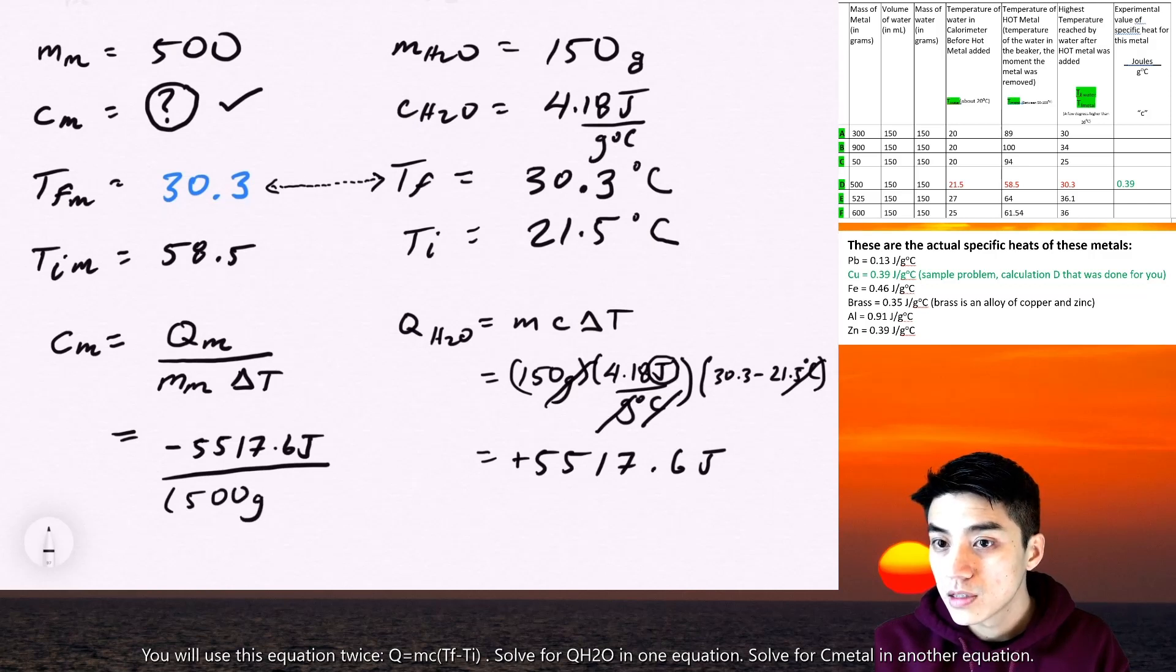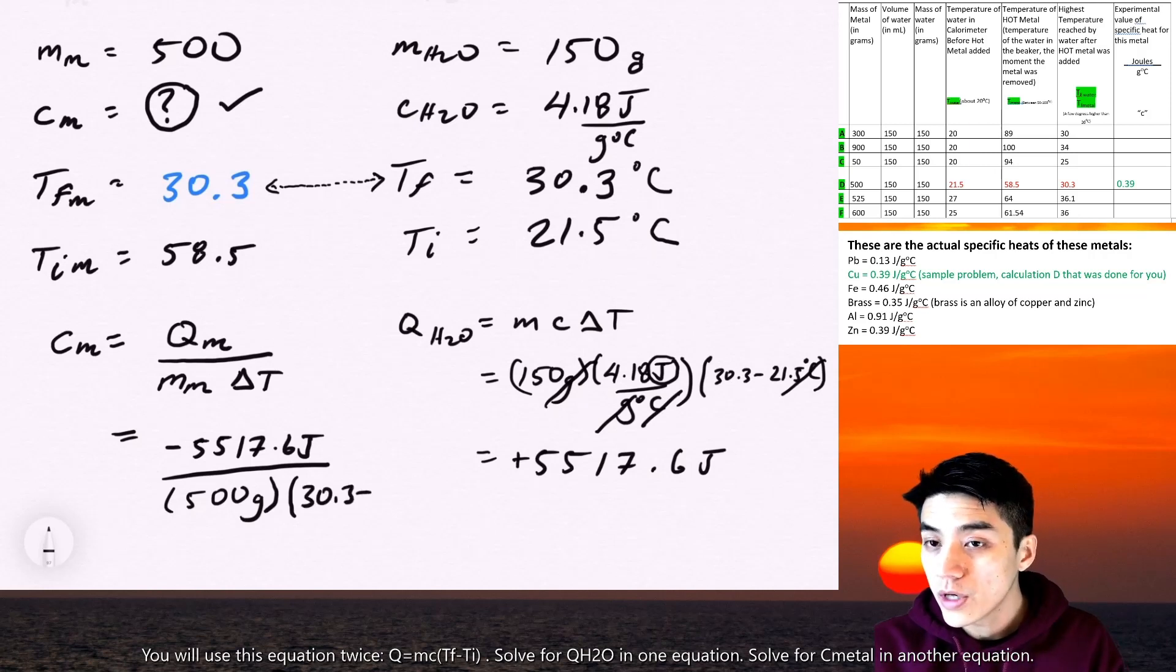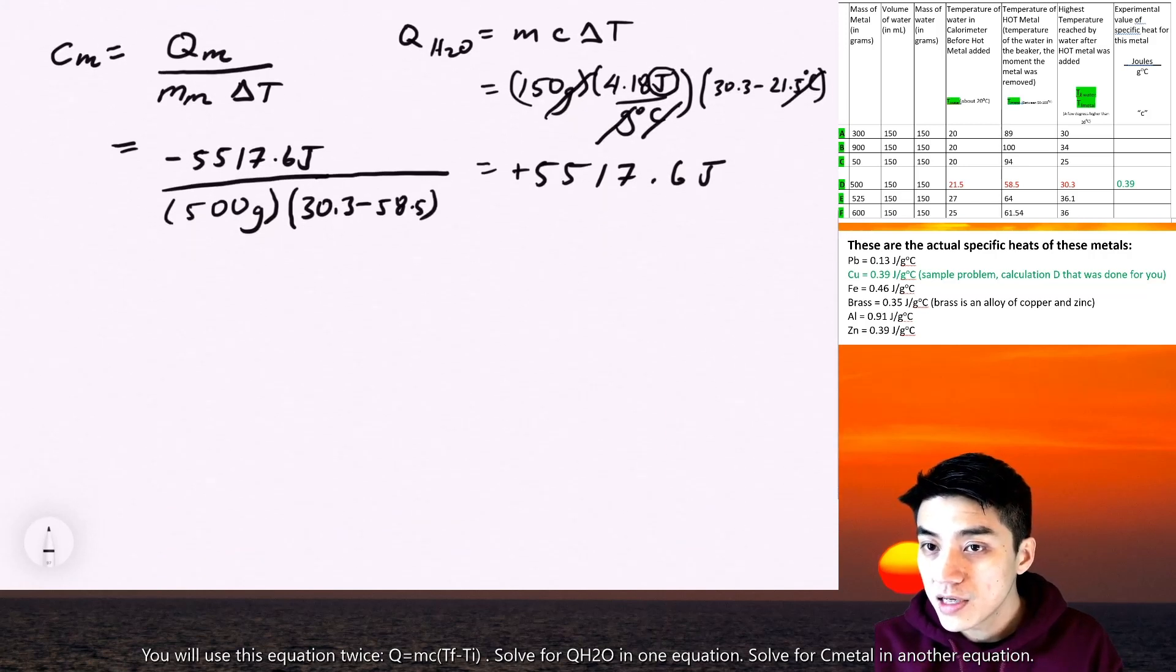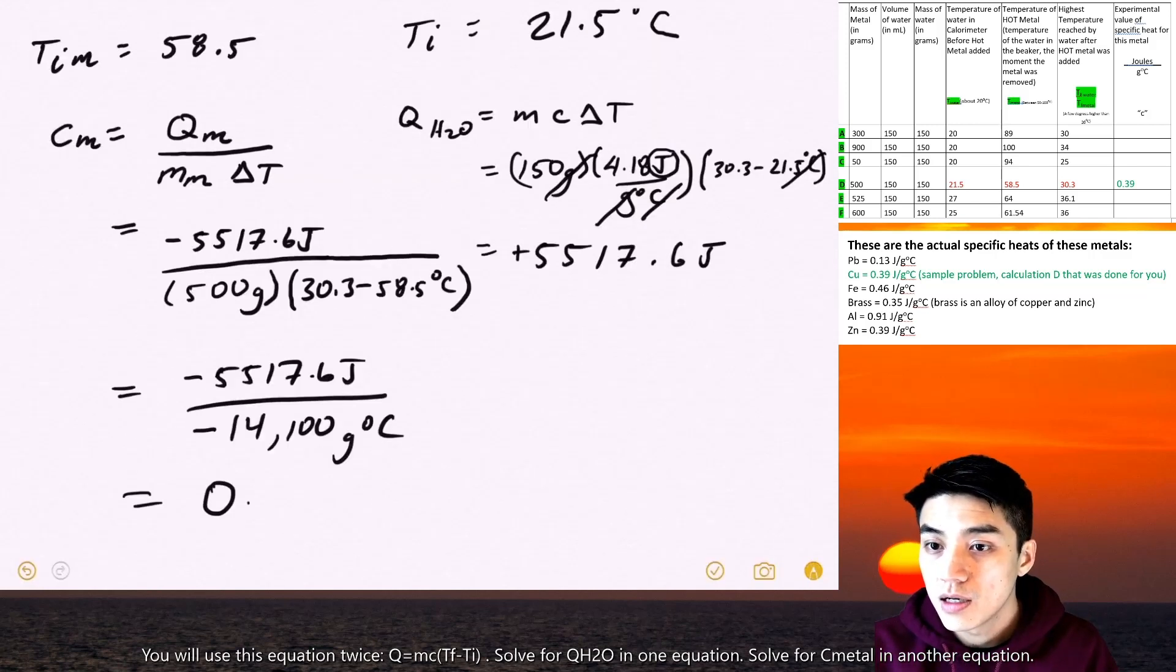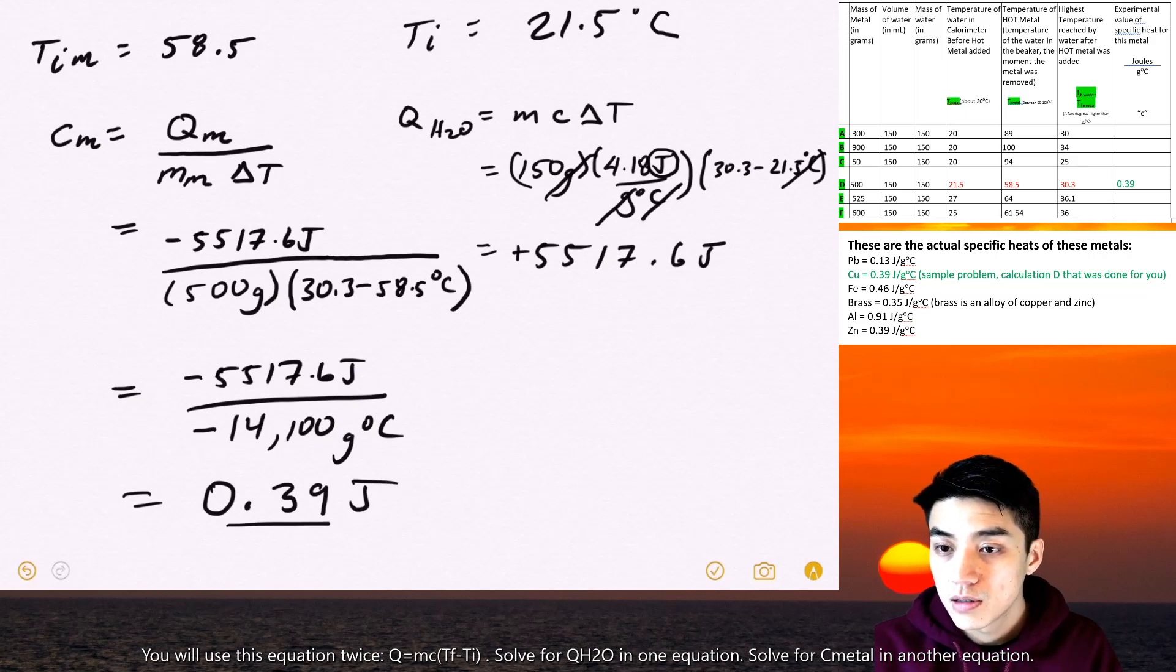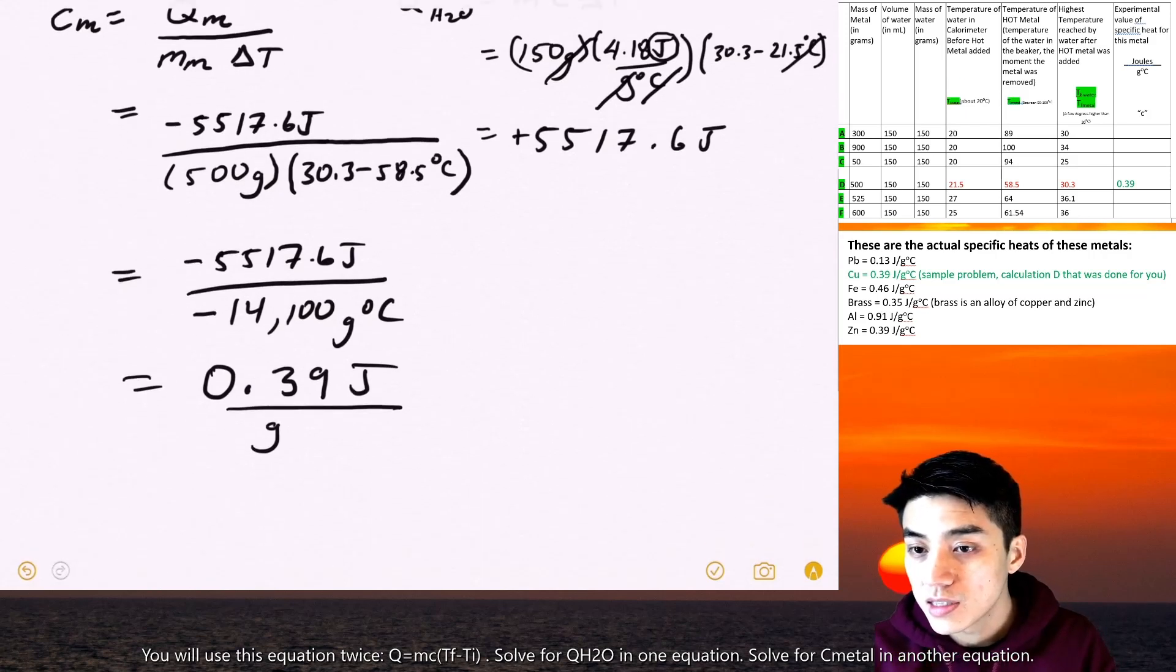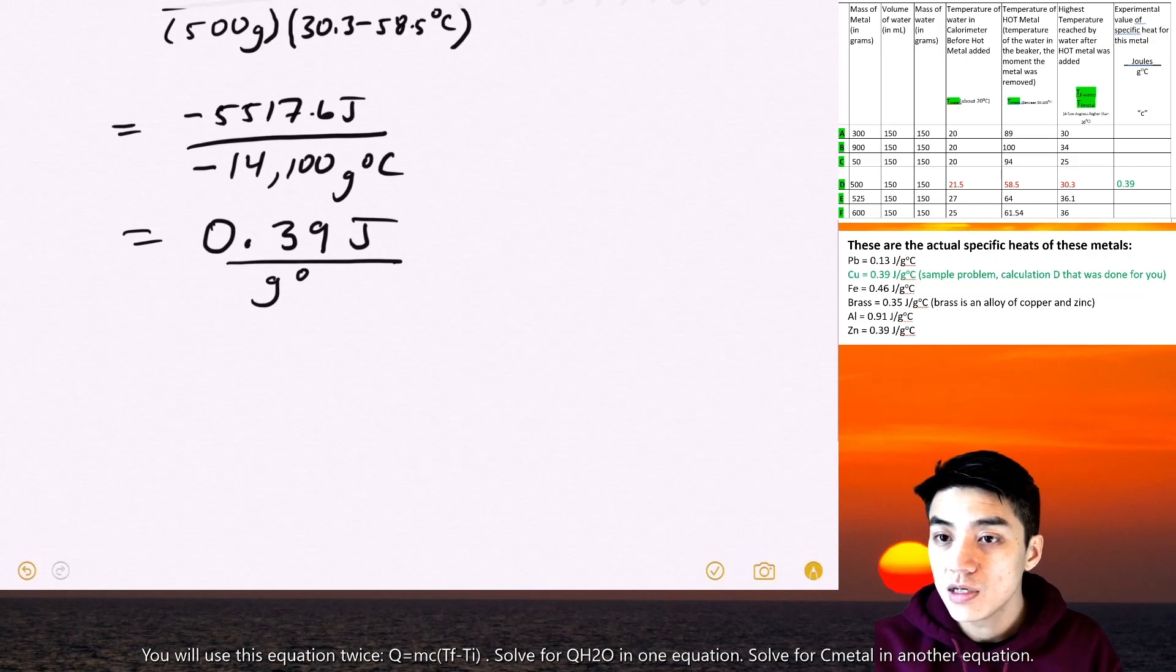I plug in my mass for the metal, which is 500 grams. And I also plug in delta T. This will be a little strange. It's going to be 30.3 minus 58.5. It's supposed to be like that. You'll get a negative sign. So a double negative cancels out. And we are going to get 0.39 joules per gram degrees Celsius. So that represents the specific heat of the metal, the unknown metal for sample D.